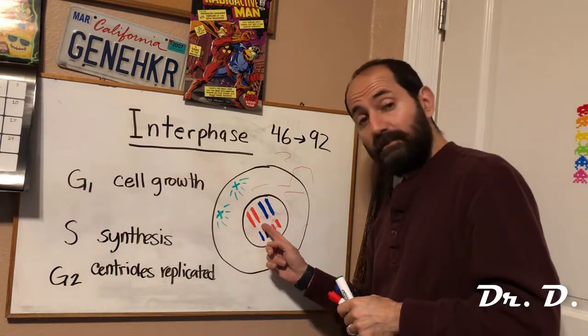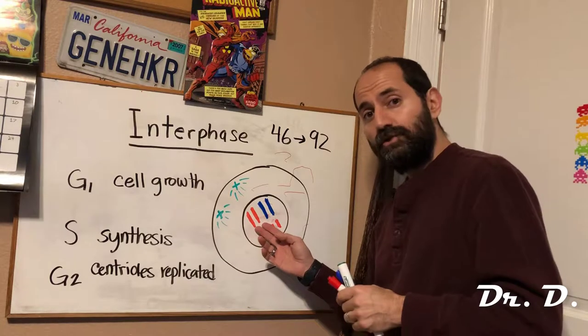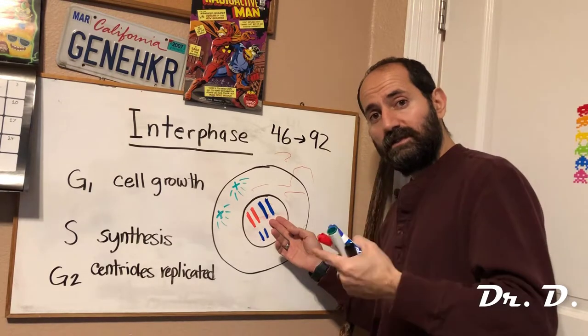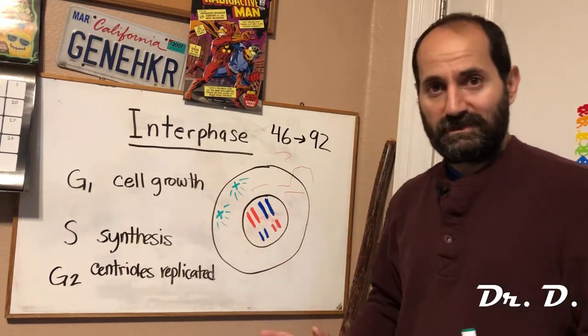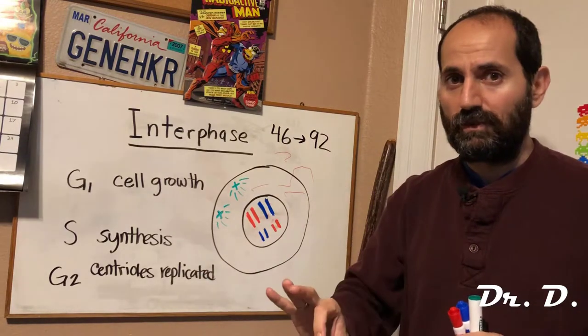When you've copied each and every chromosome, at this point notice that you now have two of mom's chromosome one, two of dad's chromosome one. You now have sister chromatids. Only after S phase do you have sister chromatids. You don't have that before. Just be aware of that.